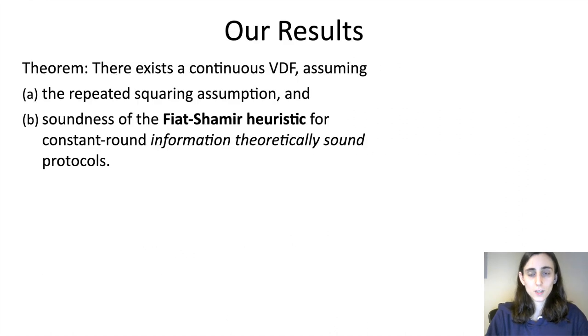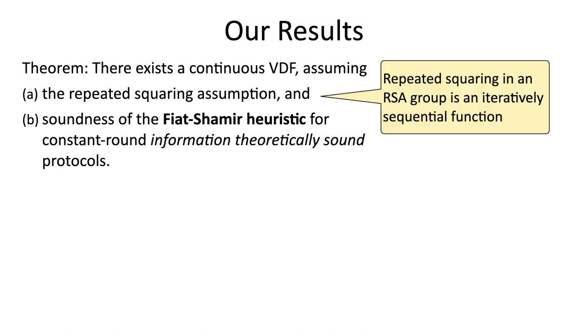So in this paper, we construct continuous VDFs, and our construction is based on a Fiat-Shamir-type assumption and the repeated squaring assumption. The first is a computational assumption which says that repeated squaring in an RSA group is iteratively sequential, so iterations of it can't be sped up. This gives us the delay property that we need, but it also means that a protocol has a setup phase because we're working in an RSA group. I should also note, though, that we could similarly rely on class groups and then remove this trusted setup.